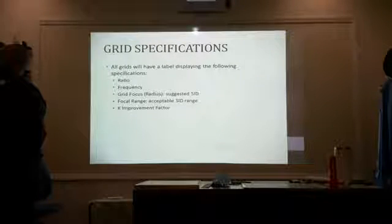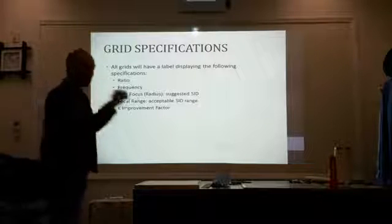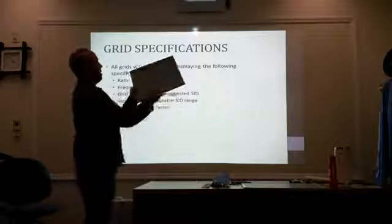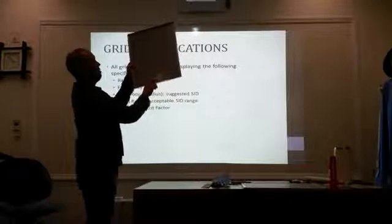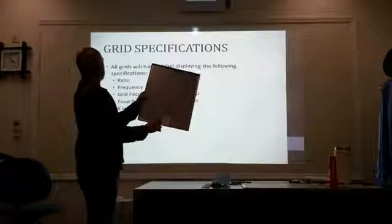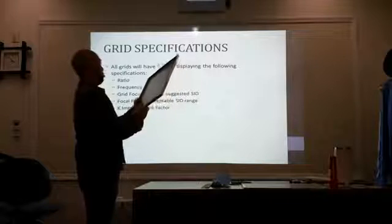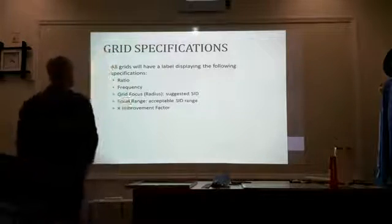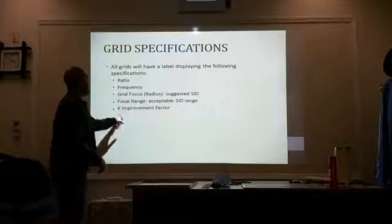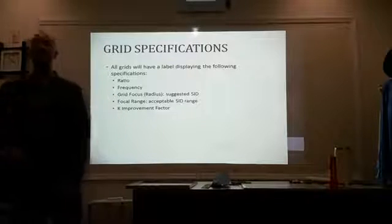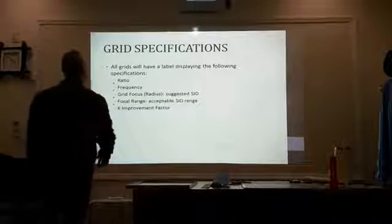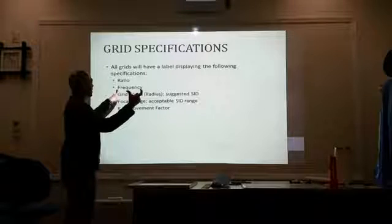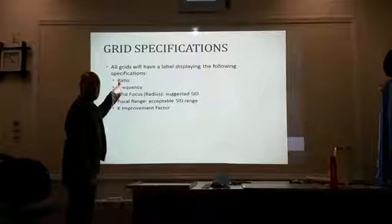Grid specifications. All grids will have a label displaying the following specifications. When I'm looking at the label, here's the label. My focal range is going to be between 36 to 40 inches. My grid radius is going to be 40 inches. My K improvement factor. What's going to give us better contrast, higher or lower grid ratios? Higher. Higher grid ratios, right? Frequency refers to the number of strips for a given length. Ratio refers to height over distance.